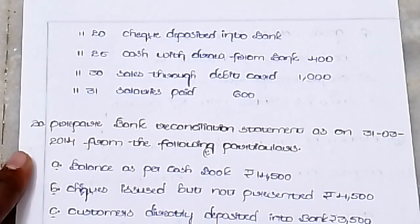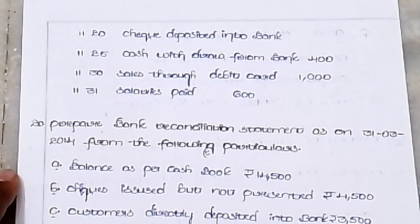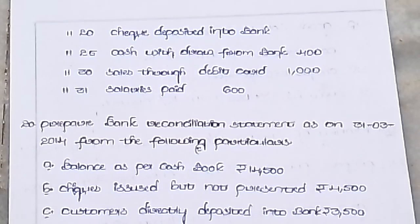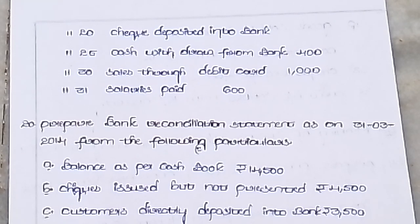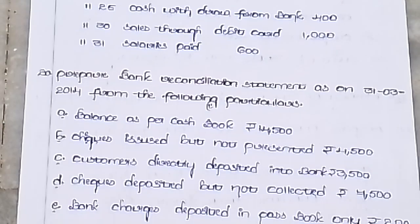Cash deposited into bank; cash withdrawn from bank 400; sales through debit card 1,000; salary paid 600.